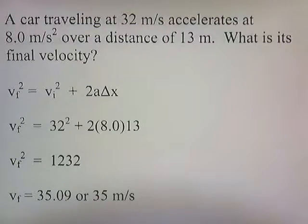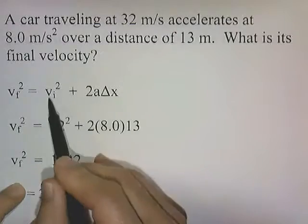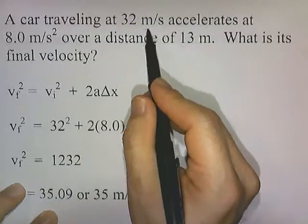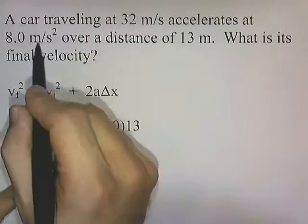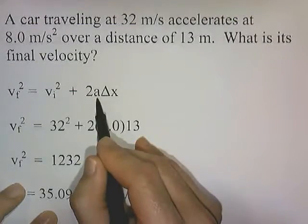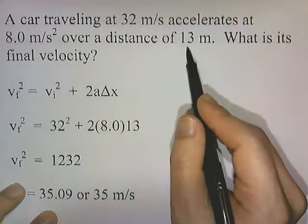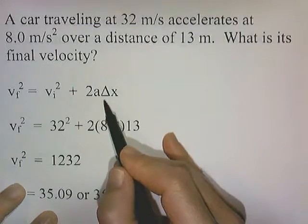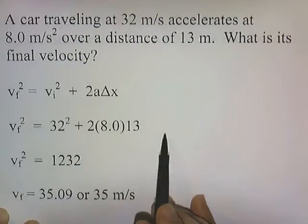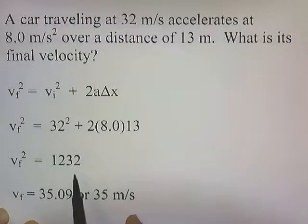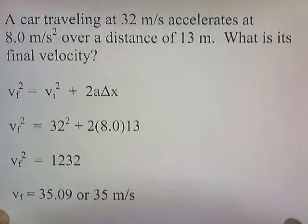A car traveling at 32 meters per second accelerates at 8 meters per second squared over a distance of 13 meters. What's its final velocity? Using vf squared equals vi squared plus 2a*delta x: vi is 32, a is 8, and delta x is 13. Grinding out the numbers gives vf squared equals 1,232. Taking the square root gives 35.09, or 35 meters per second.